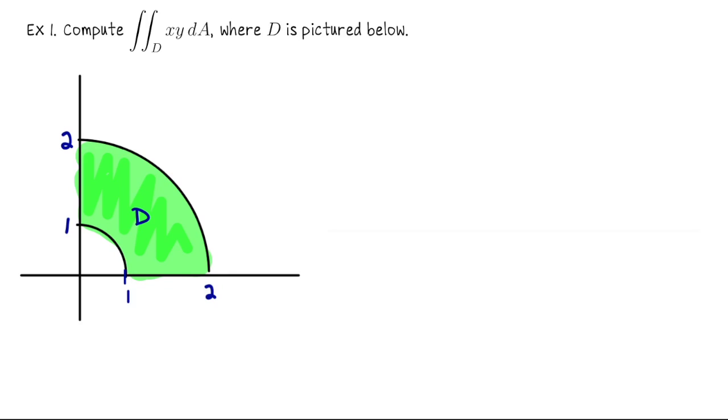If you wanted to describe this with x and y coordinates, you could make it into something like a type 1 region if you divided your integration up over 1. So for x values between 0 and 1 you could describe this region one way, and then for x values between 1 and 2 you could describe it a different way, but this is much easier by switching into polar coordinates.